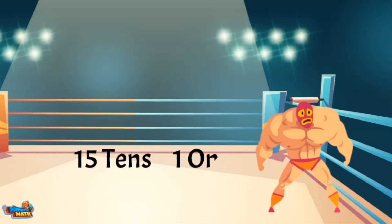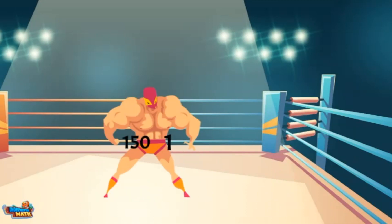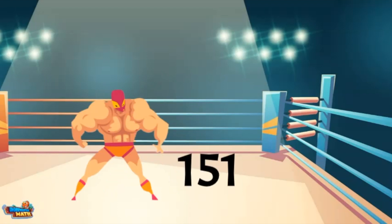Now we have fifteen tens and one one. To find the value of fifteen tens, I multiply fifteen times ten. The tens are worth one hundred and fifty. There is only one one. Let's combine one hundred fifty and one. This gives us the value of 151.